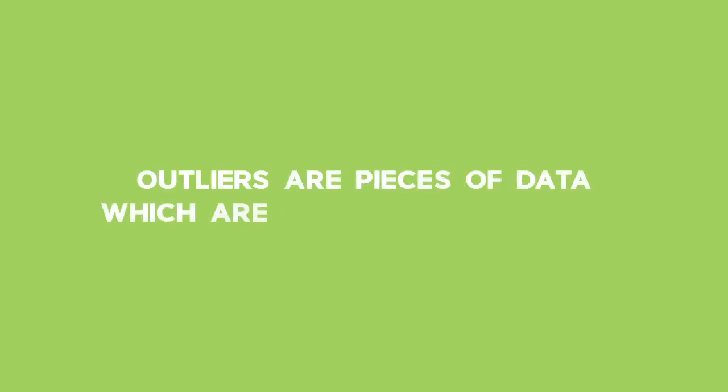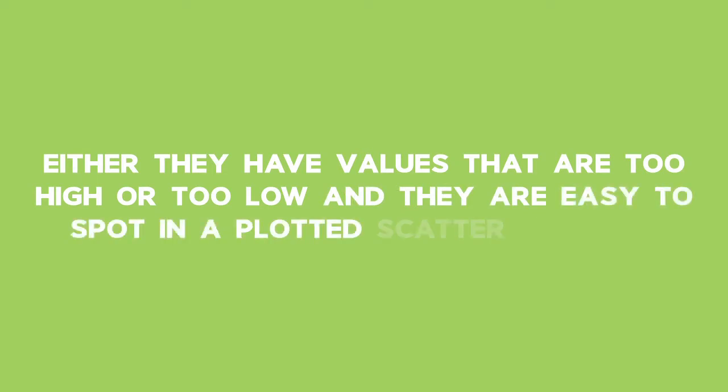Outliers are pieces of data which are out of the ordinary. Either they have values that are too high or too low, and they're easy to spot in a plotted scatter diagram.